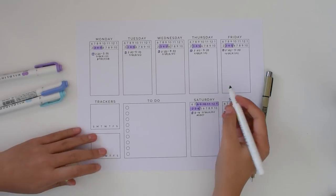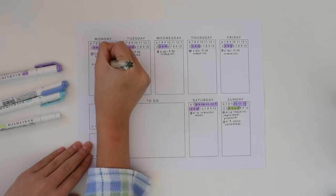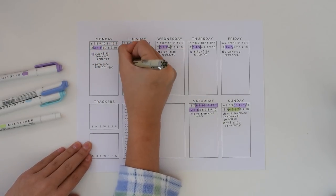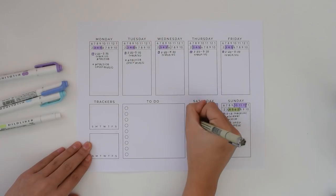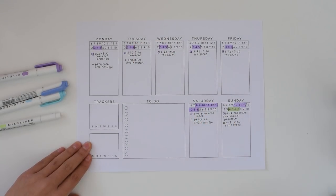On this printable, I'm first using the section at the top to schedule out everything that has a set time. Then I list out my schoolwork tasks like homework and studying and the tasks that I need to do for each extracurricular in a box for each day.